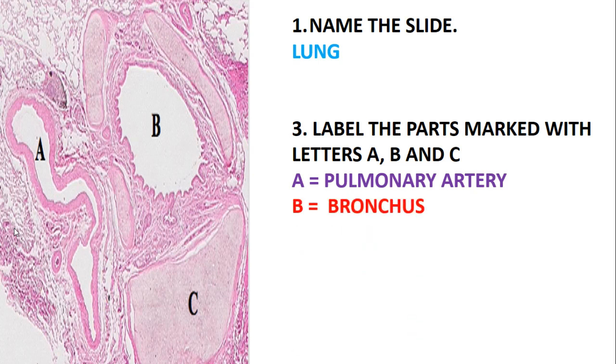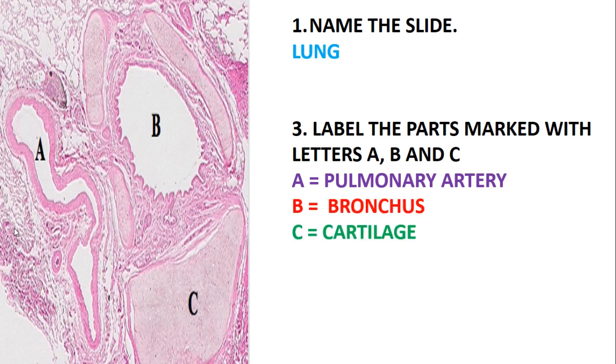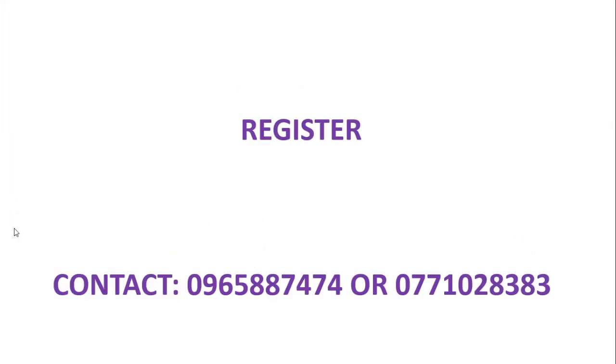A is just the pulmonary artery, B is just the bronchus, and C is just the cartilage. Please make sure that you register with Excel Academy and subscribe to our YouTube channel for more videos and to access Parts 1 to 10.